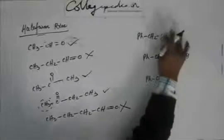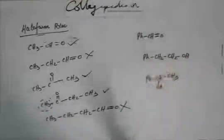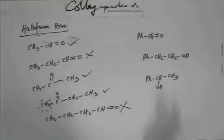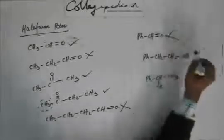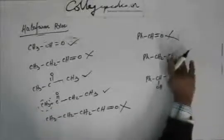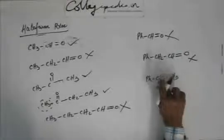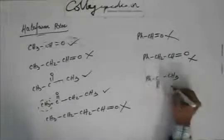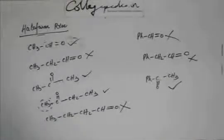Benzyl alcohol: you just have one carbon outside the ring, with hydrogen on one side and a phenyl ring on the other side. This is not going to show haloform reaction. But acetophenone — oh yes, this is going to show haloform reaction. This is acetophenone. So you are done with this; you have mastered this.